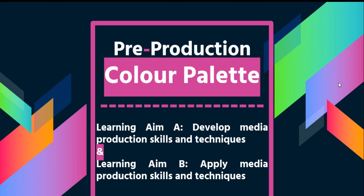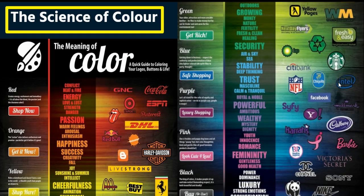You're going to be developing media production skills and techniques and applying them. I'm going to talk to you today a little bit about the psychology and science behind colors and how colors have connotations and deeper meanings attached to them. For example, red is interesting because it can symbolize lots of different things — love and romance, especially in rom-coms and on Valentine's Day, but if you apply the color red to a horror movie, the connotations become much more violent.